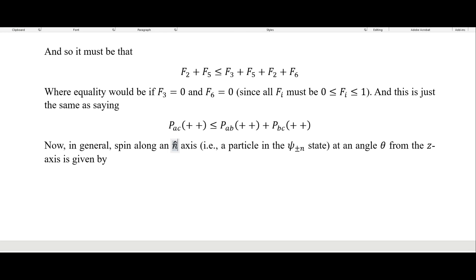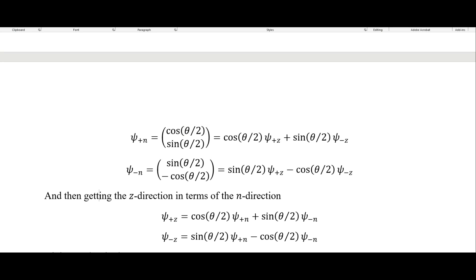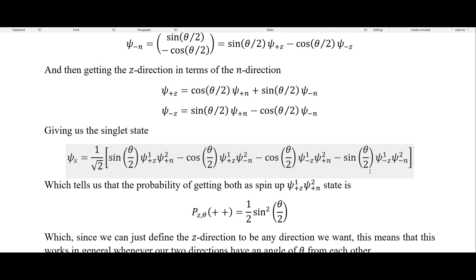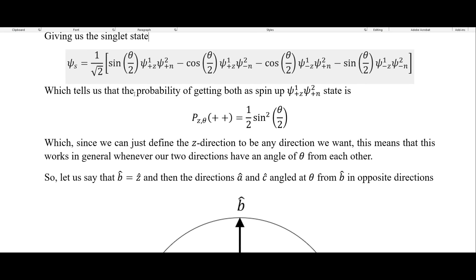Now in general, spin along some N axis at an arbitrary angle theta from the Z axis is given by this expression. If we're talking about non-orthogonal states, these are the angles theta. Getting the Z direction in terms of the N direction, we end up with the singlet state for the Z direction and some arbitrary N direction, which tells us the probability of getting both as spin up is this expression. Since we can define the Z direction to be any direction we want, this works in general whenever our two directions have an angle theta from each other.